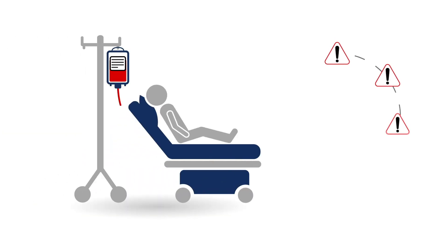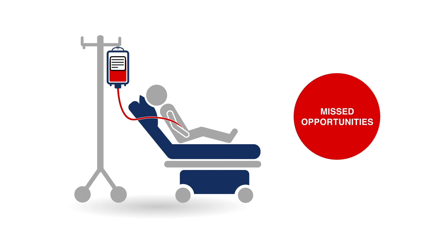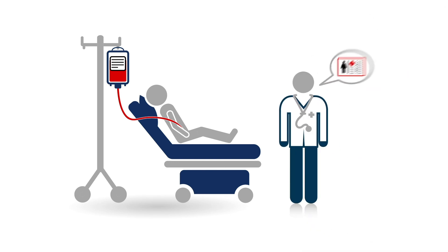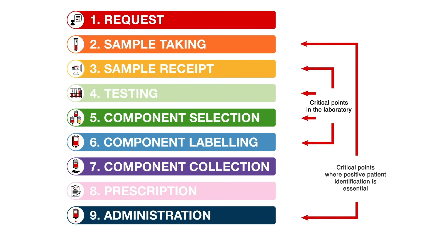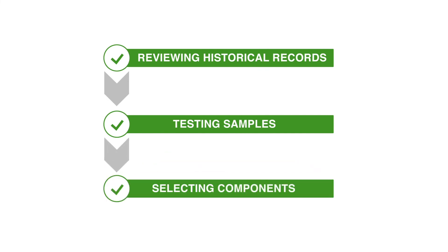SHOT has noted that many incidents are compounded by more than one error, where there may have been many opportunities to detect and correct the initial mistake. Effective communication and a solid foundation of transfusion knowledge, including patient-specific requirements, are key for all staff involved in transfusion. Many laboratory errors cannot be detected by clinical staff prior to transfusion; therefore, laboratory staff need to fulfill their responsibilities carefully when reviewing historical data, testing samples, and selecting components. Further information can be found at shotuk.org/resources/current-resources.